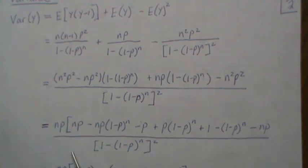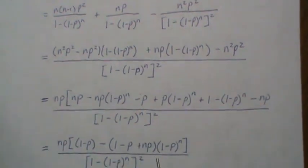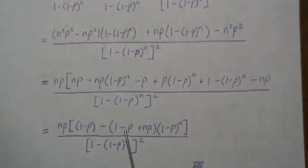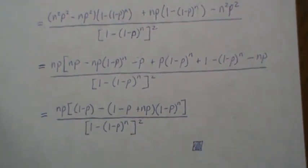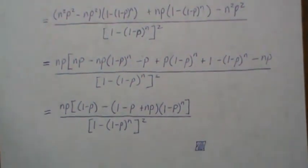A lot of this simplifies - the np minus np, etc. We have a common term which we can factor out, and it reduces to this. So that is the variance of a zero-truncated binomial distribution.